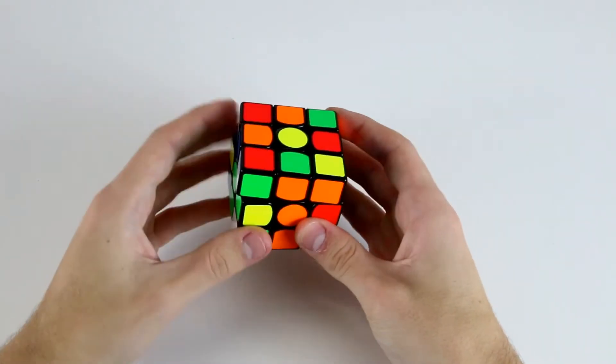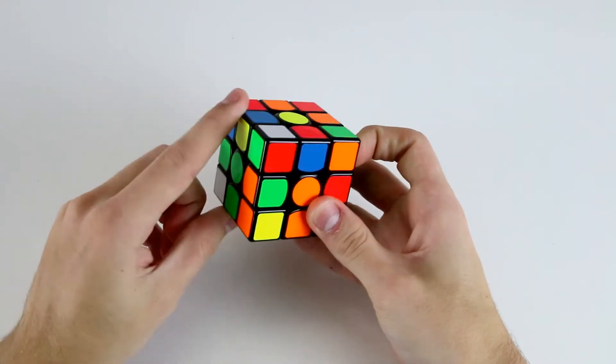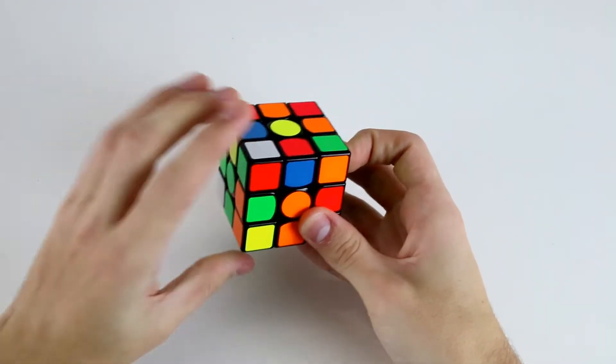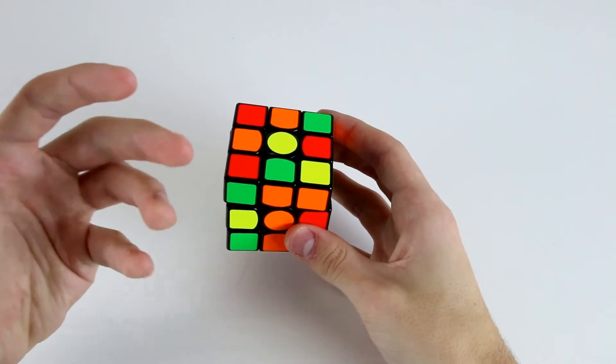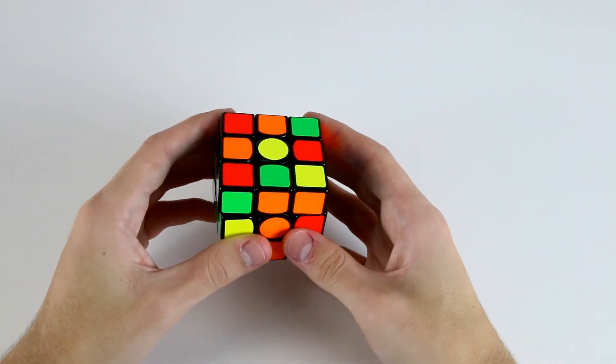However this one, this orange and green one, is not oriented because if we do a U and then do an L to move it into its position, then it's misoriented. So we can only use U, L and R moves to insert correctly oriented edges.